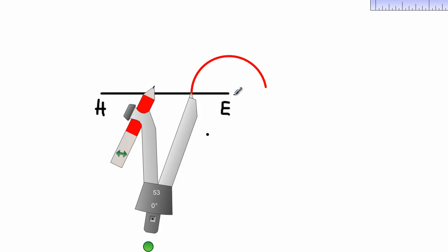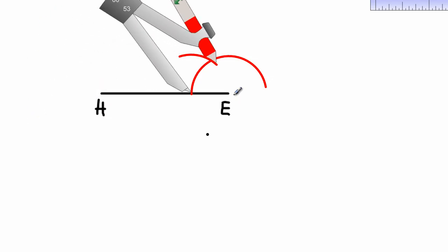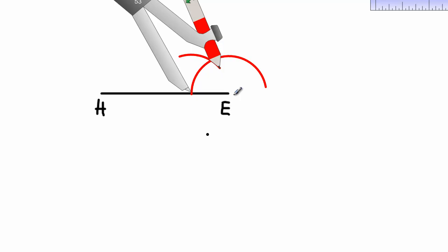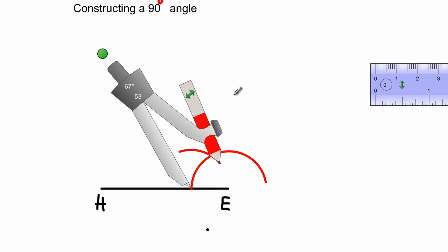From previous lessons you would have already known that that would be a 60 degree angle. If I should take my compass and place it here again, this angle that I'm now cutting will be a 120 degree.